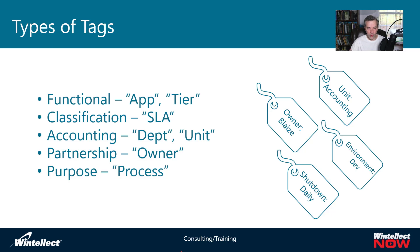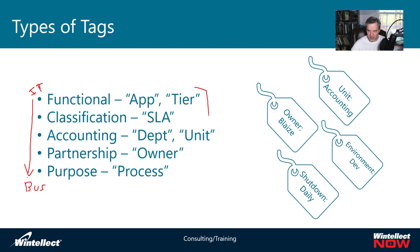The more functional tags are more IT-oriented, and the further you go down this list, they become more business-oriented. So if you can think about it like that — more IT-oriented up here and more business-oriented further down — the IT organization is probably going to have a pretty good handle on what these are going to look like when they go to start tagging resources.